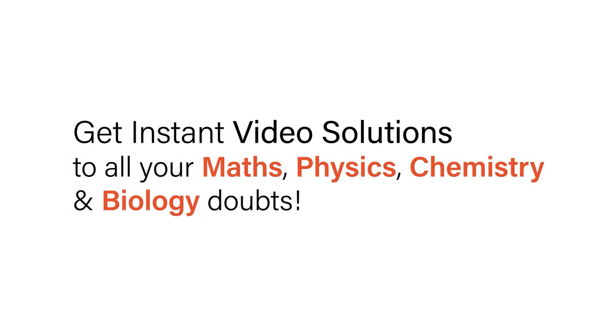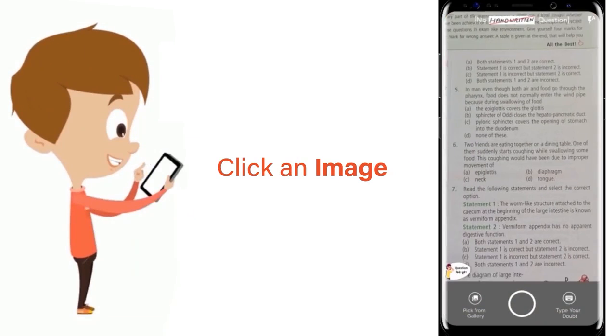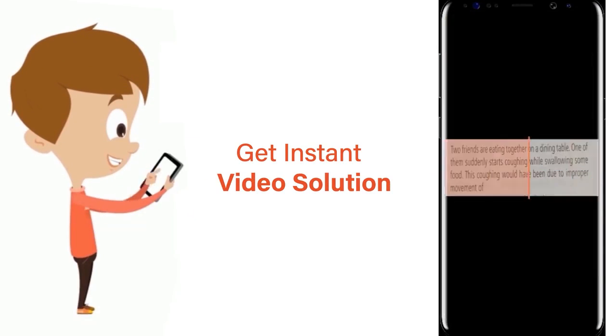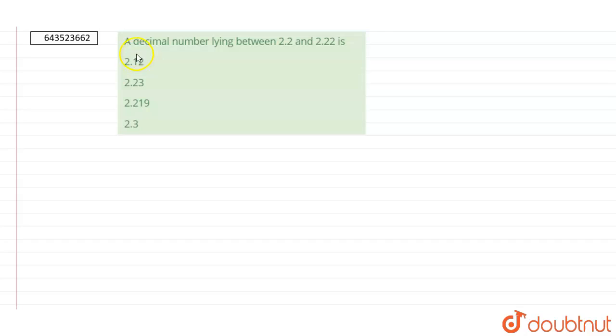With Doubtnet, get instant video solutions to all your math, physics, chemistry, and biology doubts. Just click the image of the question, crop it, and get an instant video solution. Download Doubtnet app today. The question is: a decimal number lying between 2.2 and 2.22.